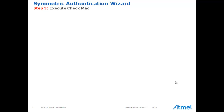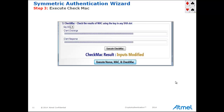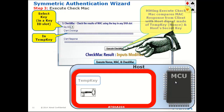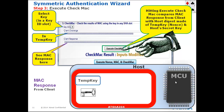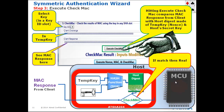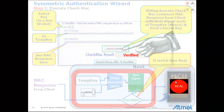The MAC response will be compared to a similar calculation done in parallel in the host, which is the next step. In step three of the wizard, we create the digest that will be compared to the response. Hitting the Execute MAC button caches the TempKey — the NONCE — and the secret key in key ID on the host to create the host digest. If the host digest and the MAC response from the client match, then the client is verified as being real. And that is the heart of symmetric authentication.